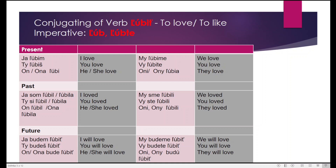The other verb ľubiť is used for both 'like' and 'love' in Slovak. It changes according to a very simple pattern. Just repeat after me: Ja ľubím. Ty ľubiš. On/ona ľúbi. Plural: My ľubíme. Vy ľubíte. Oni ľubia.